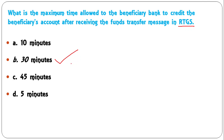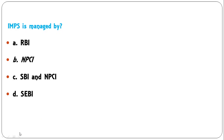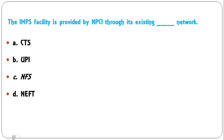IMPS is managed by which organization — RBI, NPCI, SBI and NPCI, or SEBI? The correct answer is NPCI (National Payments Corporation of India), which is an initiative of RBI — B is correct. The IMPS facility is provided by NPCI through which network — CTS network, UPI network, NFS network, or NAFT network? IMPS is provided through the NFS (National Financial Switch) network — C is correct.